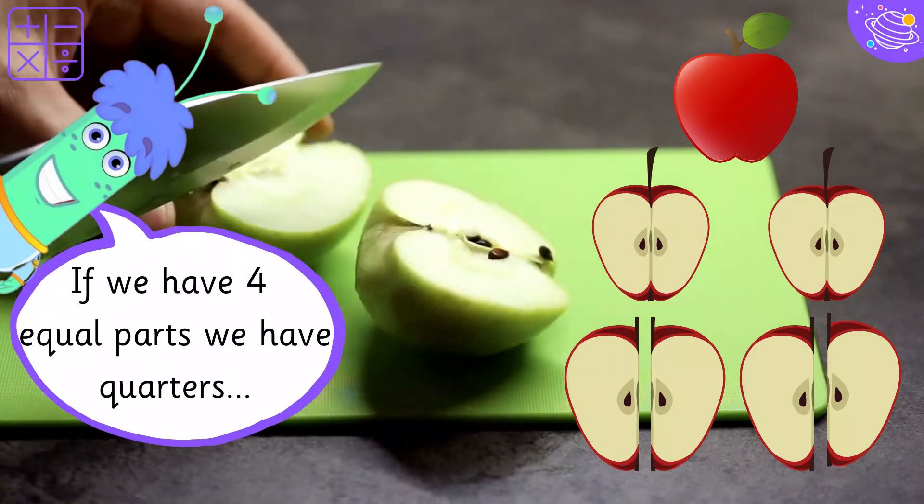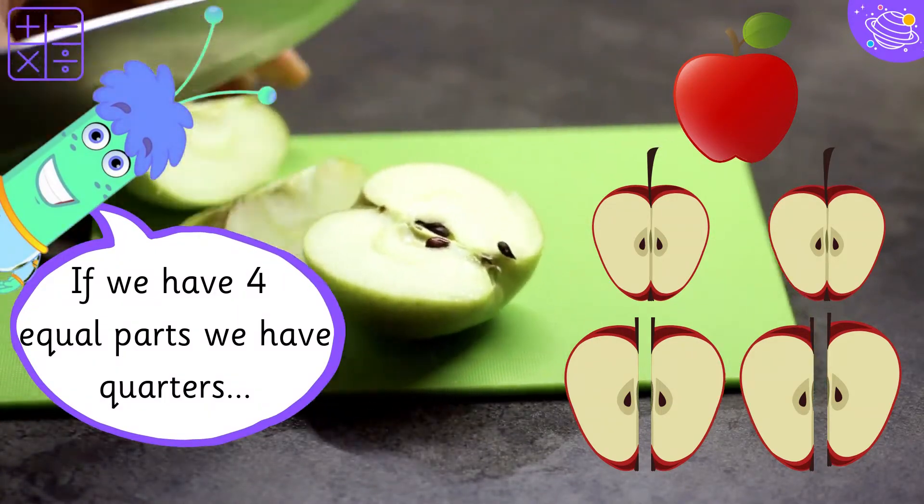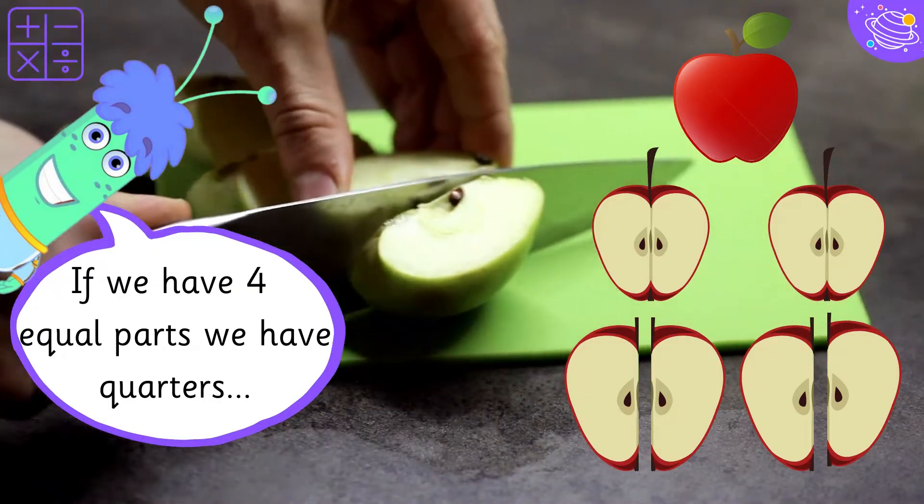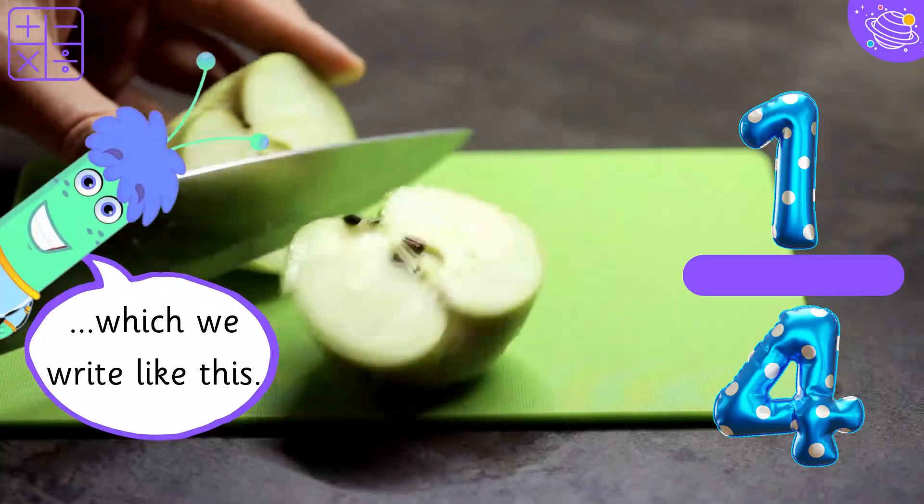If we have four equal parts, we have four quarters, which we write like this.